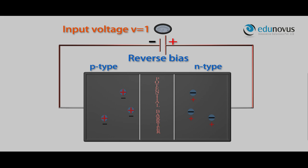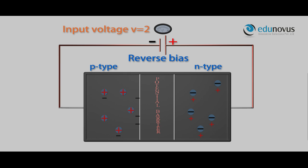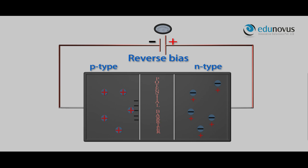These free charge carriers are attracted away. As the charges do not cross the junction due to the potential barrier, no current flows through the circuit. By increasing the voltage further, the concentration of the minority charge carriers increases and they move toward the junction and cross it. As a result, a small current flows through the junction.